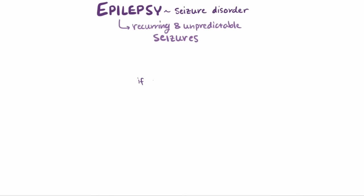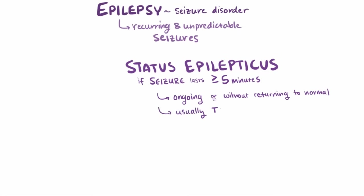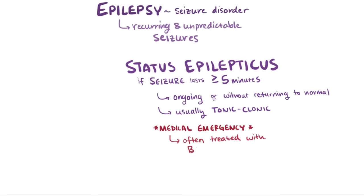If seizures last for a longer period of time, like over 5 minutes of ongoing seizures, or having multiple seizures without returning to normal in between, then it's called status epilepticus. These are usually the tonic-clonic subtype, but it can also be caused by other types that don't involve convulsions. This situation is considered a medical emergency and can be life-threatening if not treated immediately. Patients are often treated acutely with benzodiazepines, which help enhance the effect of the inhibitory neurotransmitter GABA.